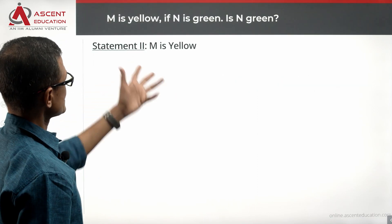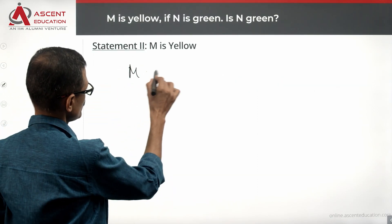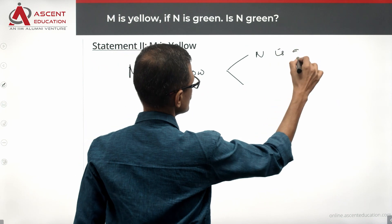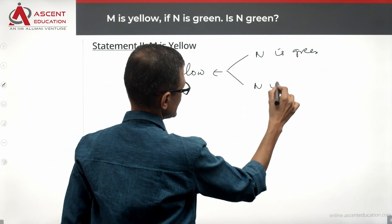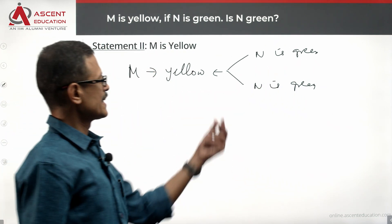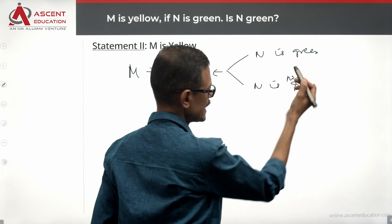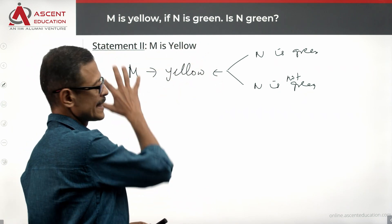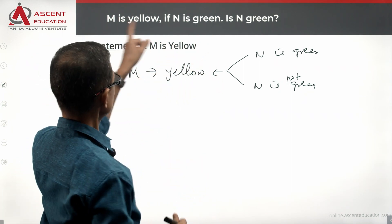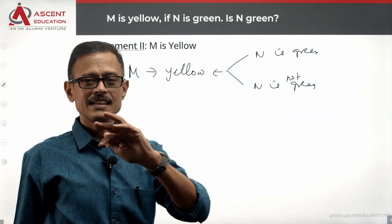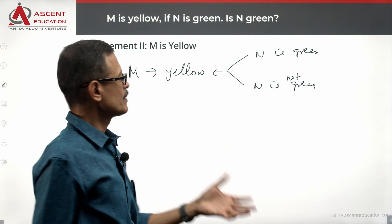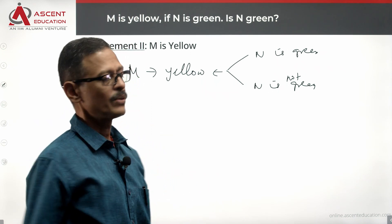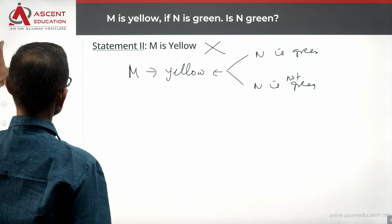Take a look at Statement 2 alone: M is yellow. If M is yellow, this could happen either when N is green or when N is not green. When N is green, M has to be yellow — but M being yellow does not confirm N is green. M could be yellow even when N is not green. Therefore, statement two alone is not sufficient. Let's eliminate answer option B.